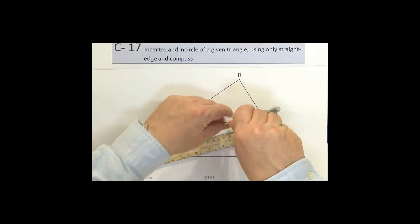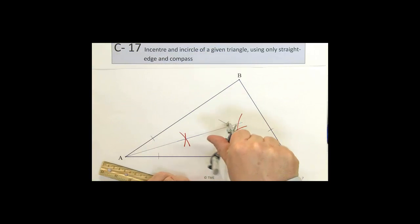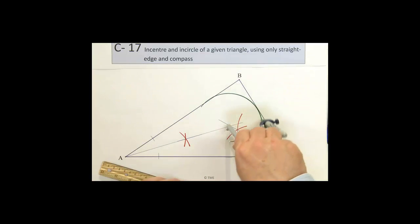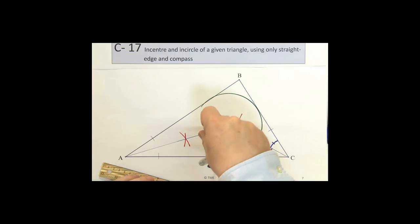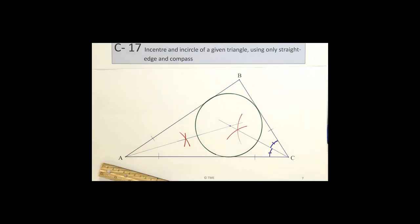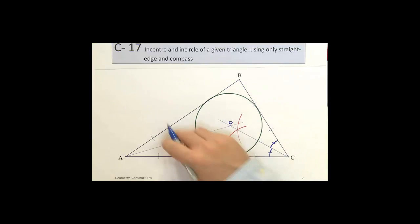To the edge, to the edge, to the edge. We should be able to draw a circle that reflects the inner circle of the three sides A, B, and C from the incenter. So we have the point O and the circle for construction 17.